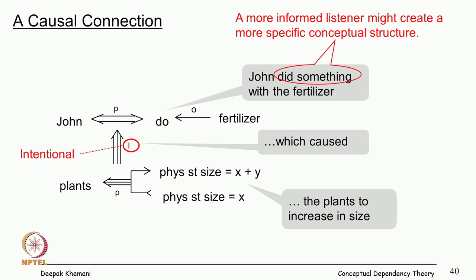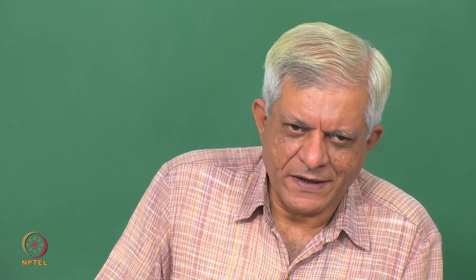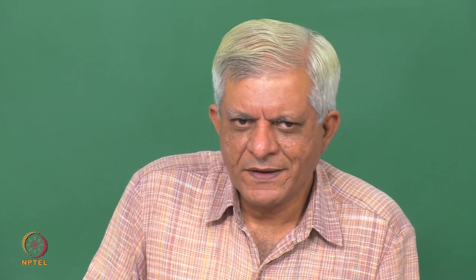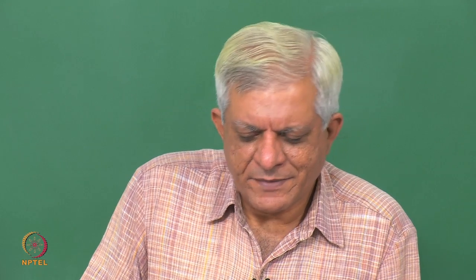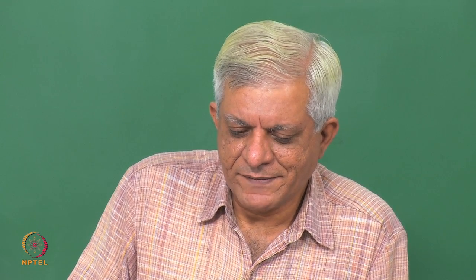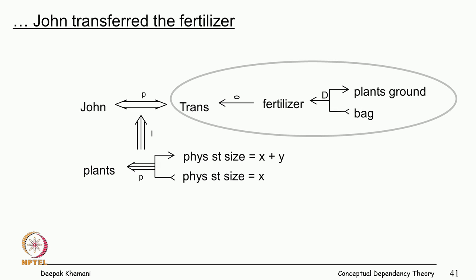There are markers like 'I' for intentional — he did this intentionally. The simplest representation is that John did something as a result of which the plants grew. But if you are more knowledgeable — if you know what fertilizer is and what you do with it — you may create a different conceptual structure: he transferred the fertilizer from a bag to the ground where the plants are growing, as a result of which the plants grew from size x to x plus y. It depends on the world view of the reader.